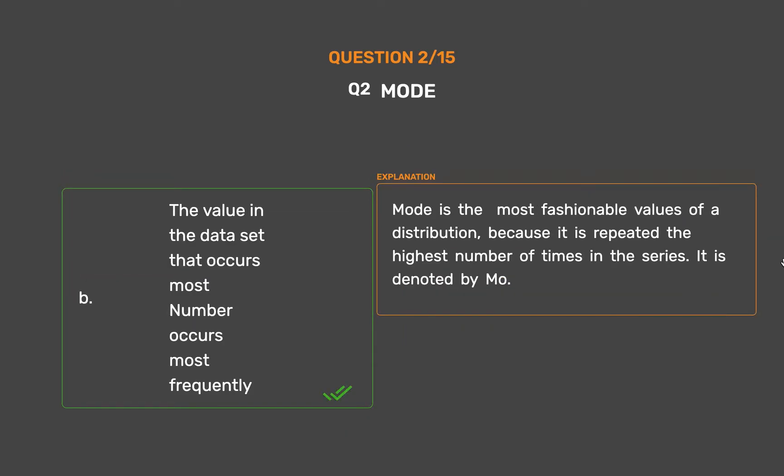Mode is the most fashionable value of a distribution, because it is repeated the highest number of times in the series. It is denoted by Mo.